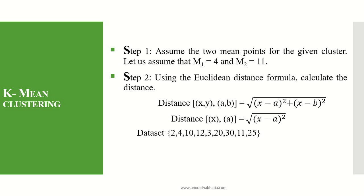Assume the two mean points for a given cluster. Let us assume that M1 is equal to 4 and M2 is equal to 11. These are the two means. Using the Euclidean distance formula, we calculate the distance. You can consider any other two means and solve the problem in a similar way.